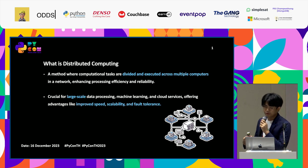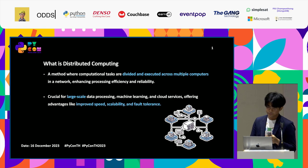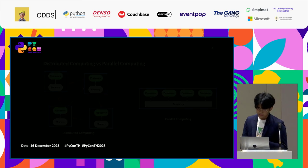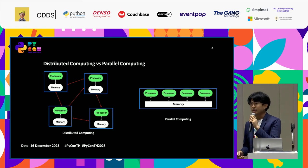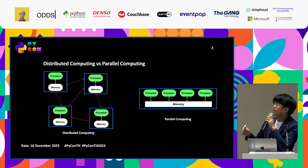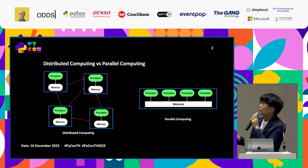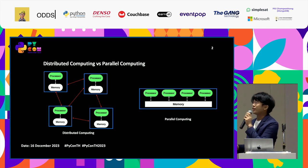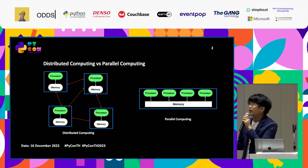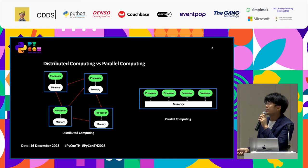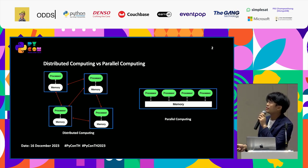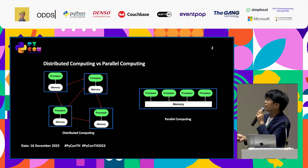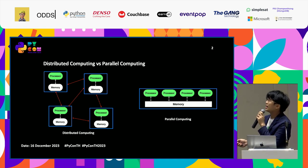Distributed Computing is used for large-scale data preprocessing, machine learning, and cloud services. It offers advantages like improved speed, scalability, and fault tolerance. In contrast, parallel computing divides tasks within a single device and executes them on that same device.